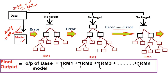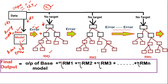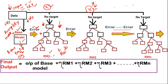Data is passed to the base model and it predicts some output. We compare this output with actual values, and there will be some error. That error goes to a decision tree (RM1 — residual model 1). We pass X and Y to the base model, but for RM1 and subsequent residual models we only pass X variables. RM1 is grown to full depth and predicts another set of residuals.